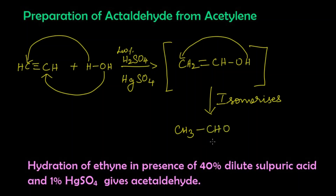In the isomerization, this hydrogen gets attached to the other carbon, and CH₂ changes to CH₃CHO. The name of this compound is acetaldehyde. So acetylene, which is also called ethyne, is added with a water molecule in the presence of 40% sulfuric acid and mercuric sulfate.